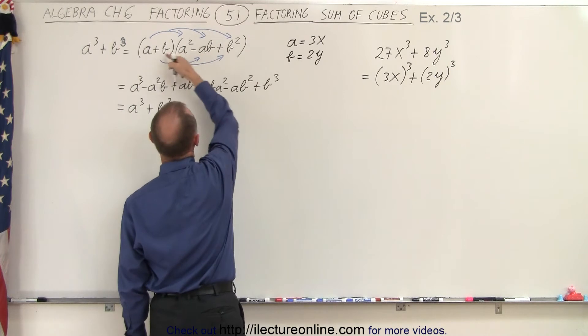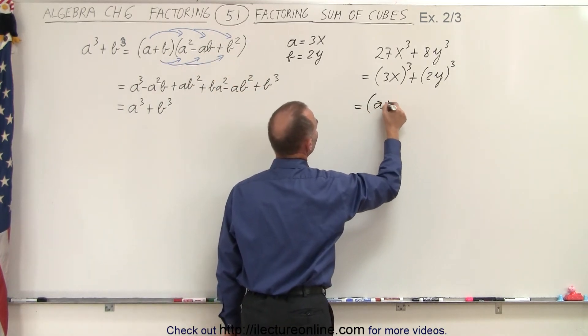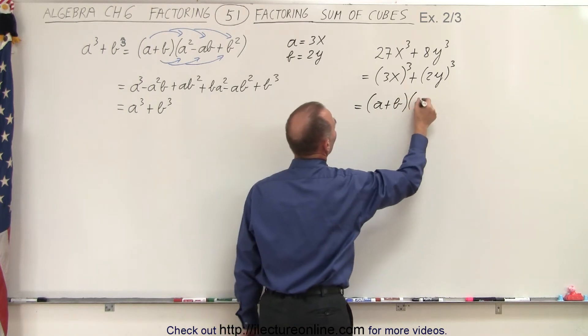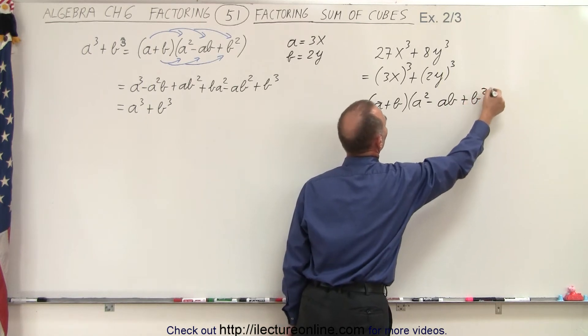and then we simply apply that to our factored form here. So this can then be written as a plus b times a squared minus the product ab plus b squared.